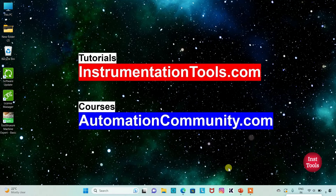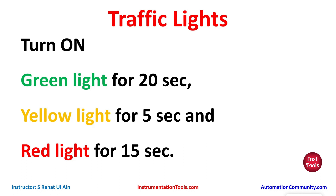Hello friends, welcome to Automation Community. Today in this video we are going to discuss an interesting example on traffic lights. The example is: turn on green light for 20 seconds, yellow light for 5 seconds, and red light for 15 seconds.